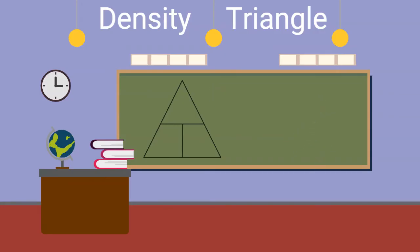Sometimes, however, we are given density and either the mass or the volume of the object and asked to find the other variables. Using the density triangle is a visual that can help us know what formula to use no matter what information is given.